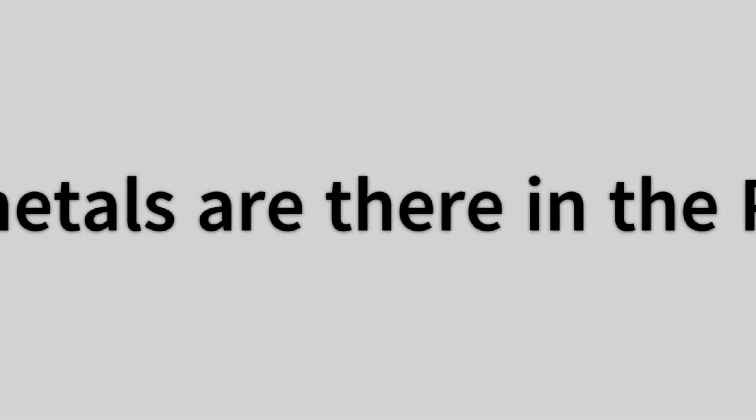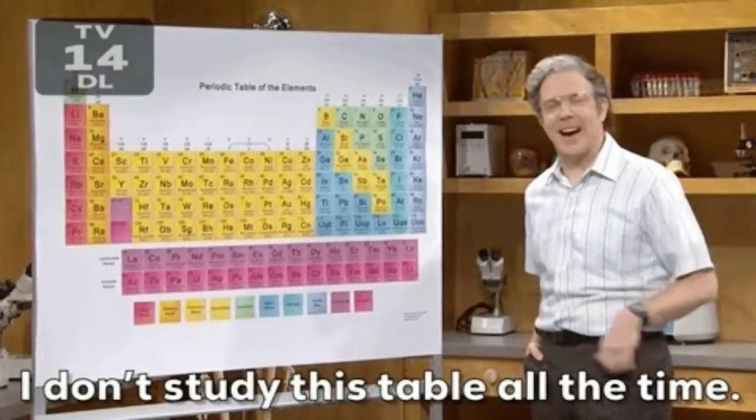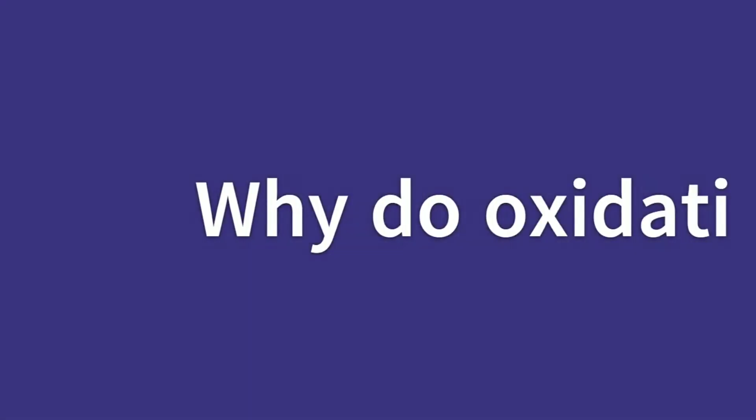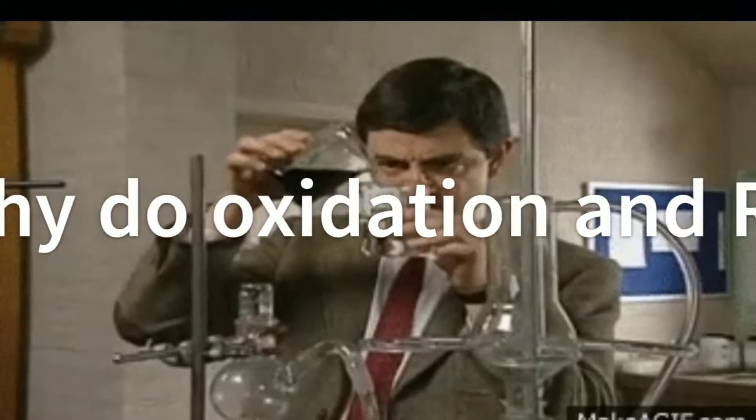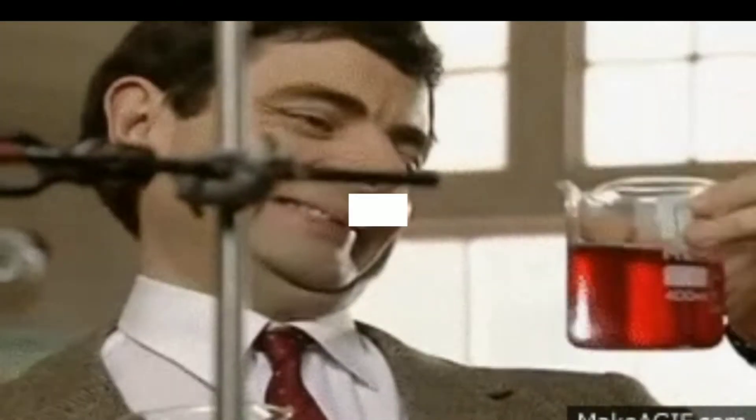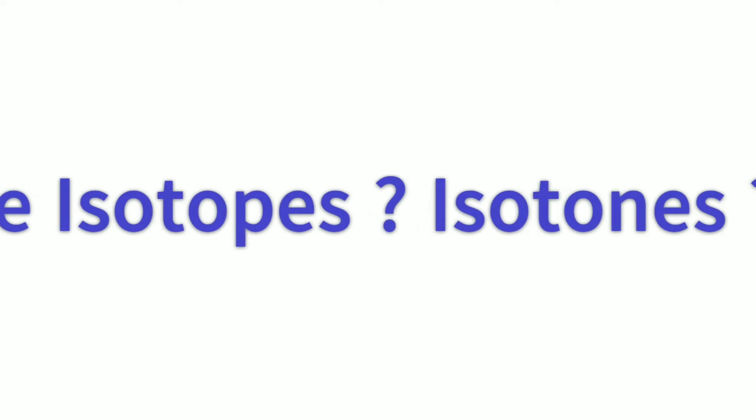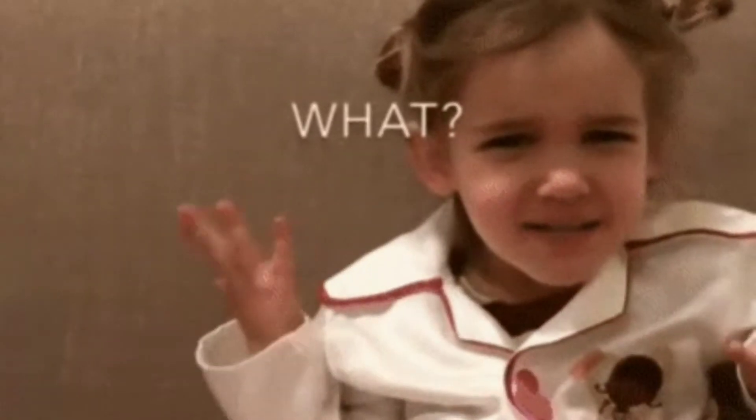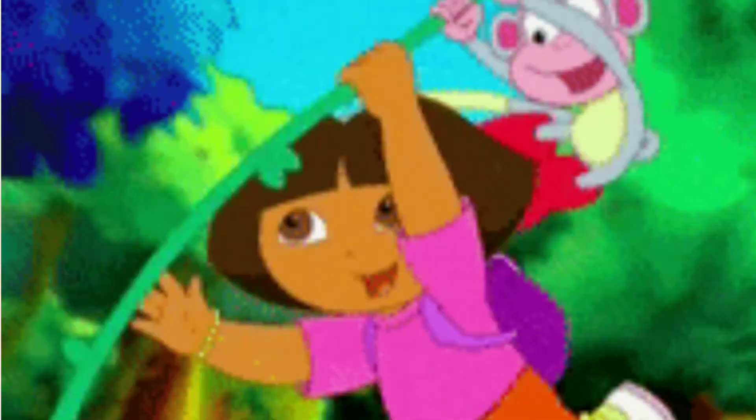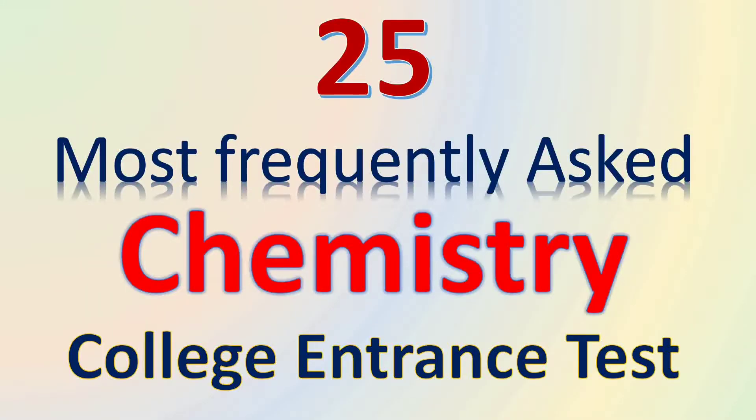Do you know how many metals are there in the periodic table? Do you know why oxidation and reduction always occur simultaneously? Do you know how IUPAC names are assigned to organic compounds? What are isotopes, isotones, and isobars? How are antibiotics different from antiseptics? Are you ready to explore? Let's explore it together. Hello and welcome to you all. Today we are going to see 25 most frequently asked multiple choice questions from the chemistry portions of college entrance tests. Let's begin.